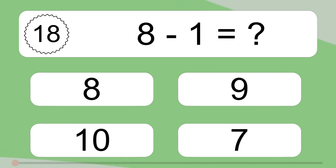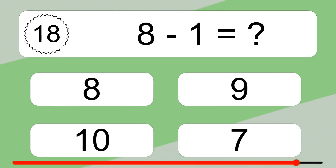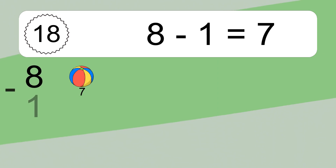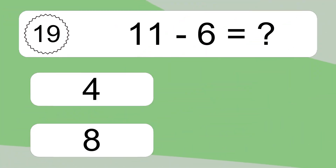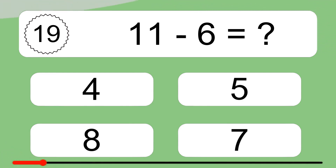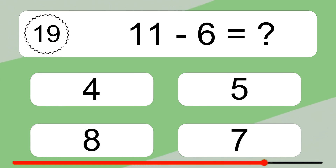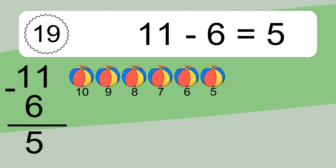18 minus 1 equals what? 18 minus 1 equals 7. Let's count it: 18, 7. 11 minus 6 equals what? 11 minus 6 equals 5. Let's count it.